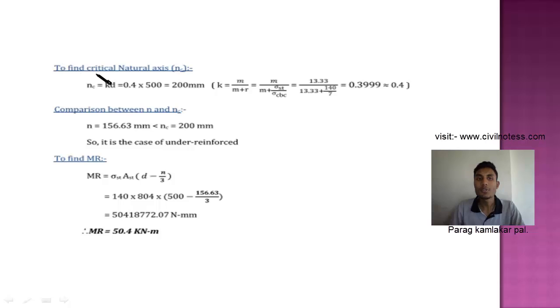Now proceed for the next portion to determine the critical depth of the neutral axis. So it is defined by K into D. K is 0.4 and D is 500. K is determined by M upon M plus R, where R is given by Sigma ST upon Sigma CBC. Put all the values, you got the critical depth of the neutral axis NC equals 200 mm.